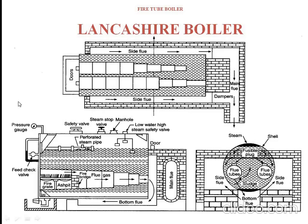Coming to the parts: there are two large fire tubes, one here and the second here, and for each fire tube there will be a grate at the starting. Over the grate, we are going to burn coal in the presence of air. After the grate, there is a fire brick lining. The main use of this fire brick lining is that it prevents coal or ash from entering into the tubes. At the same time, it deflects the flue gases in the upward direction.